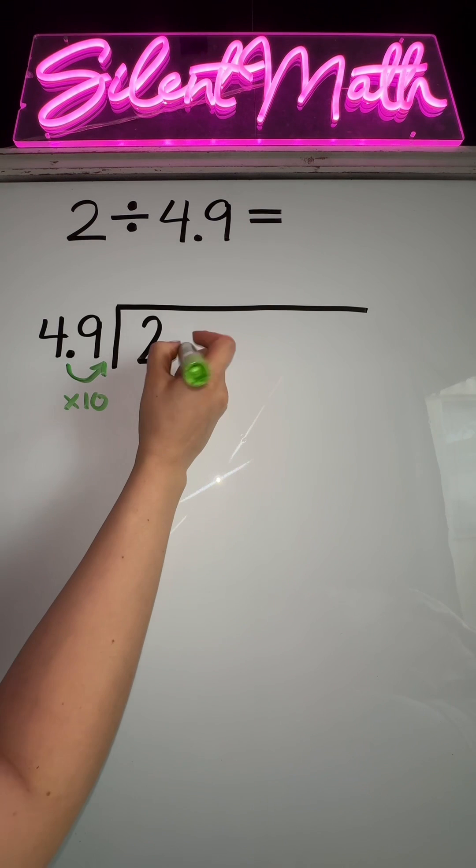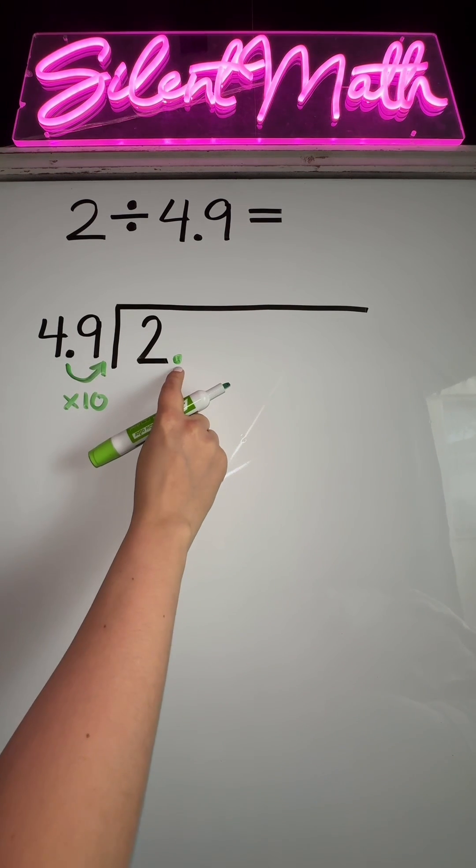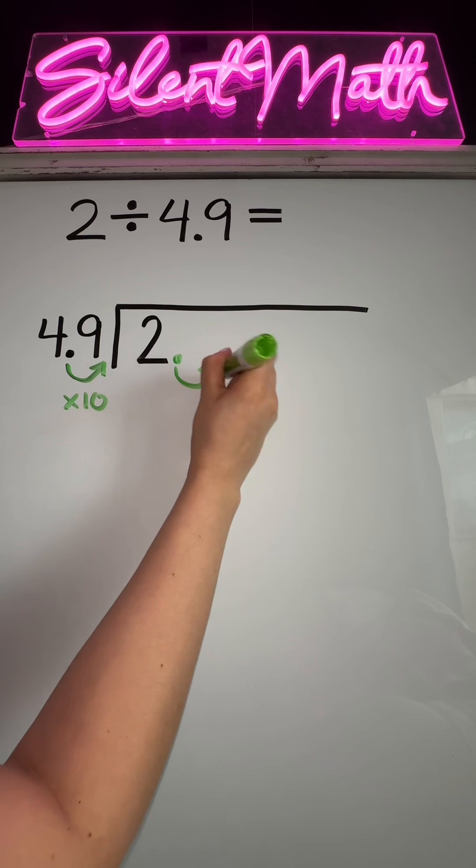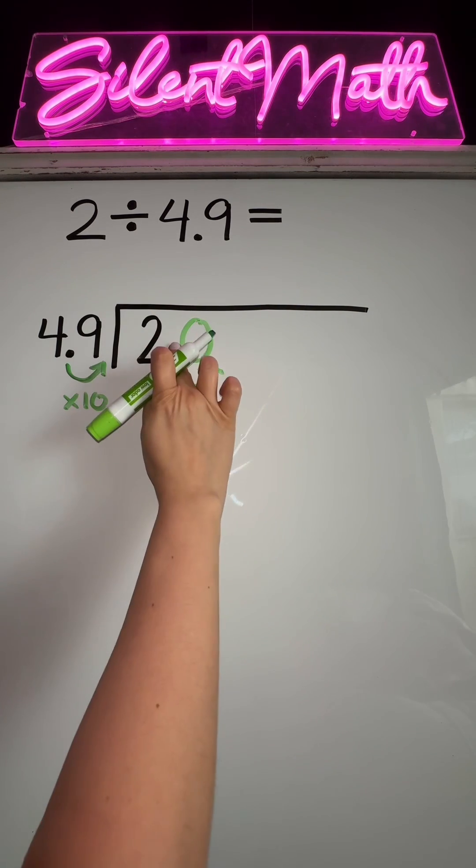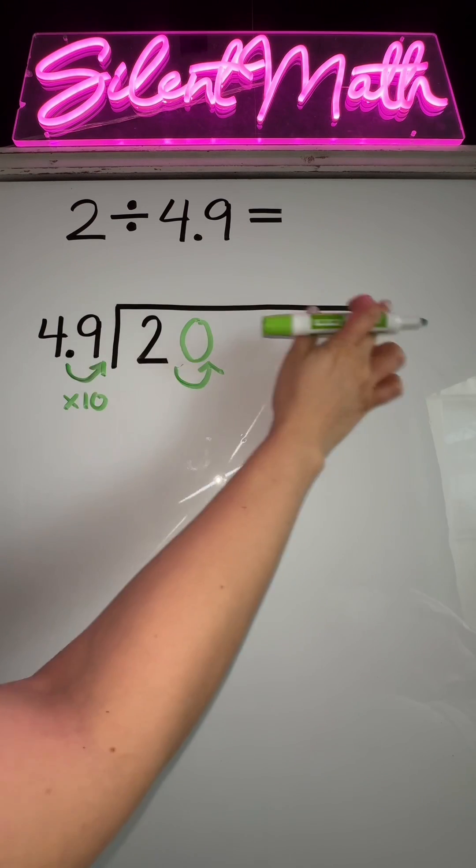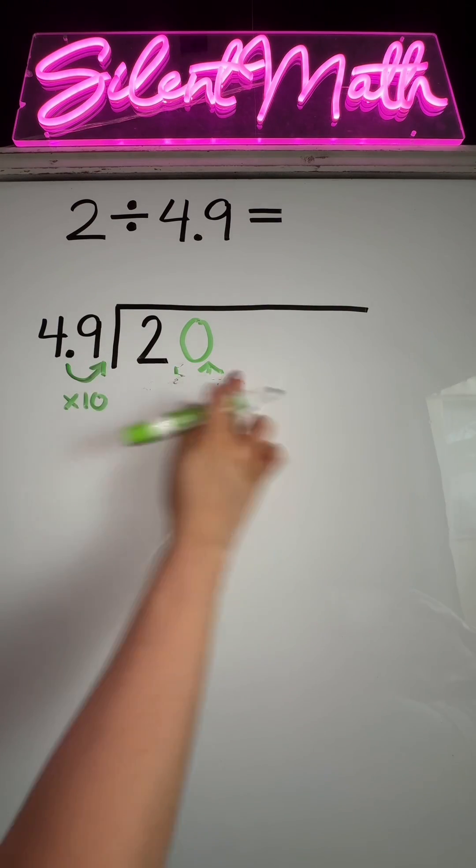All whole numbers have a decimal at the end, it's just invisible. So we are also going to move the decimal once to the right. We are going to end up having a zero. So it's now going to be 20 divided by 49, and we're going to divide from there.